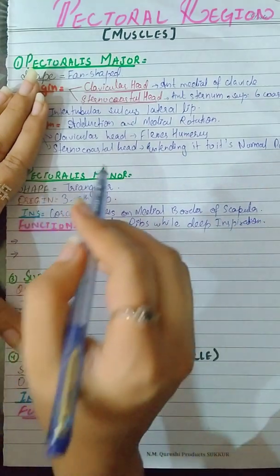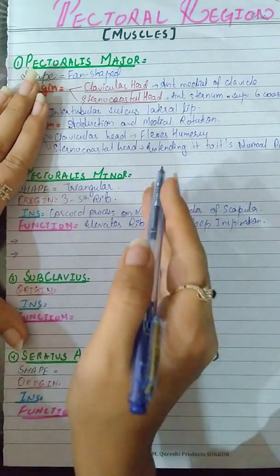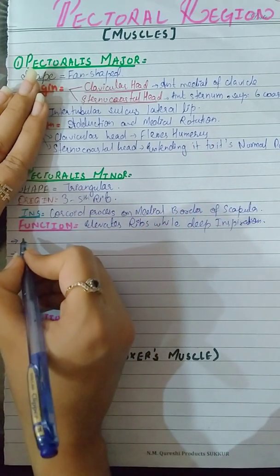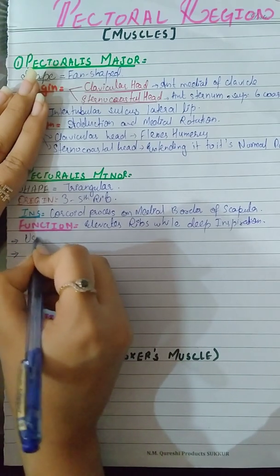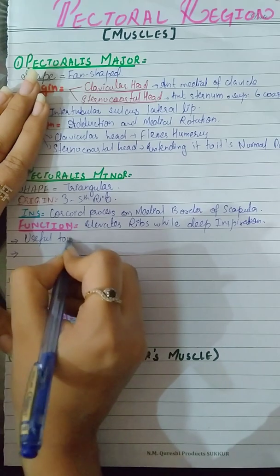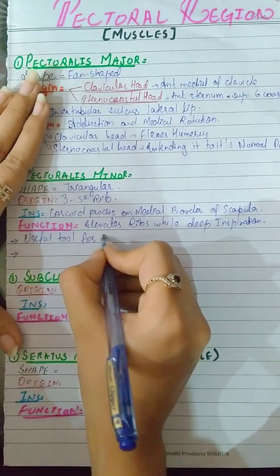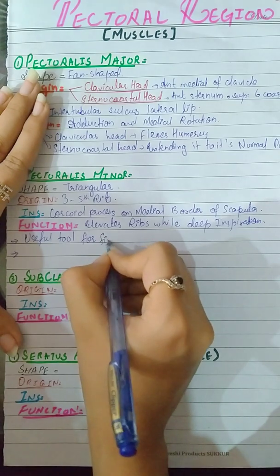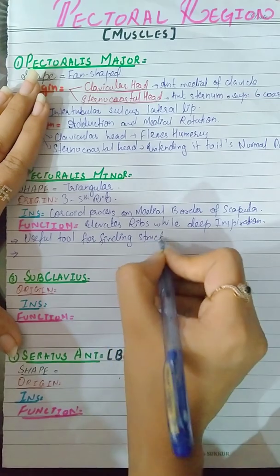The pectoralis minor is a useful surgical landmark for finding structures of the axilla.